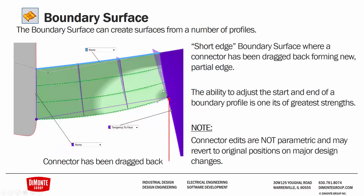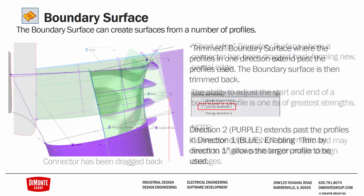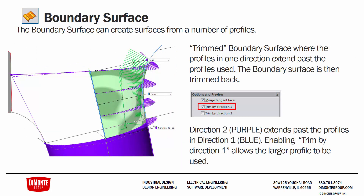When using the boundary surface, you have the option of modifying what's referred to as the connector between existing model edges. This surface has one profile in direction one but two profiles in direction two between two edges. Because one edge is much longer, I grabbed this little dot called the connector and dragged it up to create a short-edge boundary surface. This is a useful way to adjust the start and end of the profile to better shape your surfaces without needing a split line or 3D sketch. Note that these connectors aren't entirely parametric, so after making model edits verify the connector is where you want it.